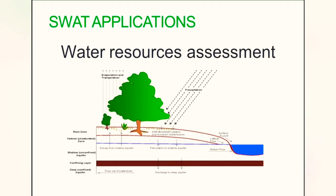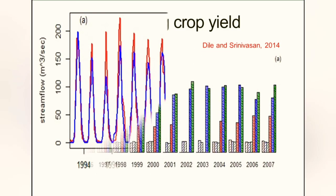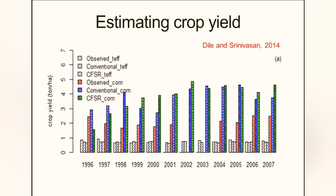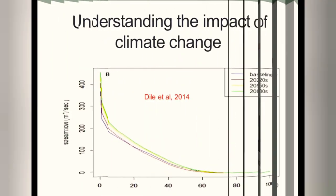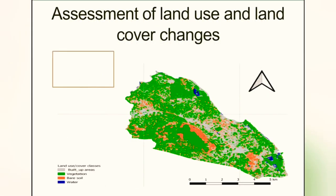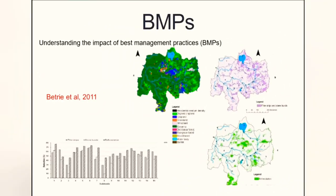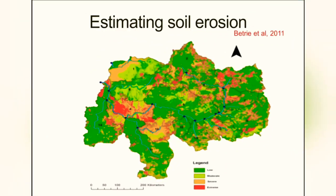SWAT applications span various fields of study including agriculture. SWAT is used in water resource assessment, estimating stream flow, estimating crop yield and land productivity of a river basin, understanding the impact of climate change, assessing land use and cover changes, understanding the impact of best management practices, and estimating soil erosion. As you can see on the map, the red color represents areas with extreme soil erosion while the green color represents areas with less erosion.